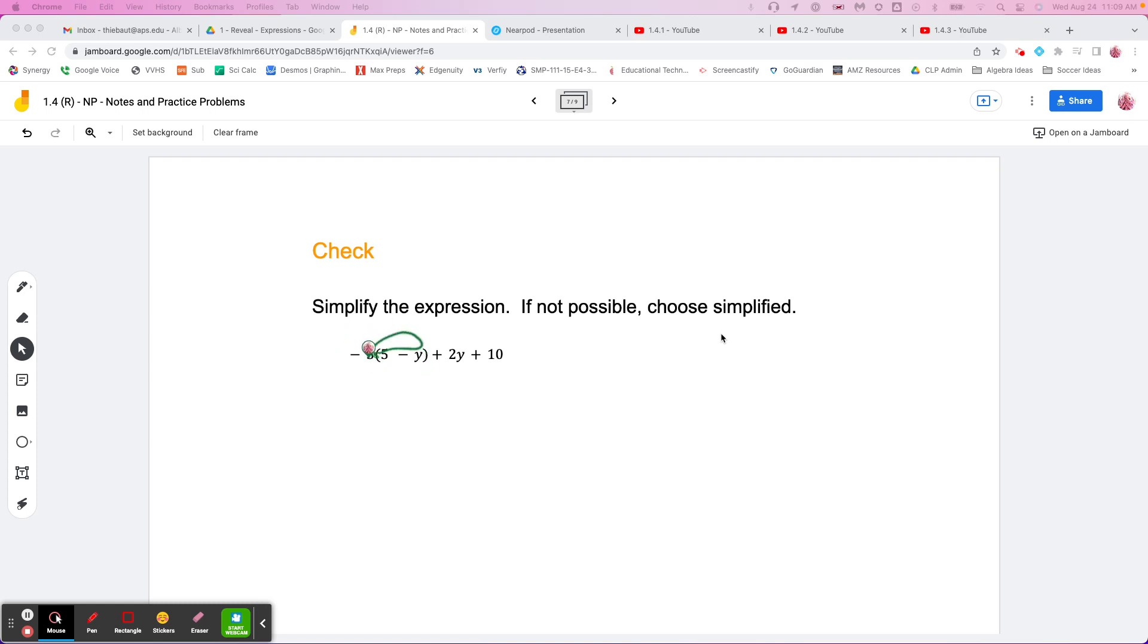So what we do here is I'm going to do this times this, then I'm going to do this times this. Negative three times five is the first one, the minus sign comes down, and then I do negative three times y.